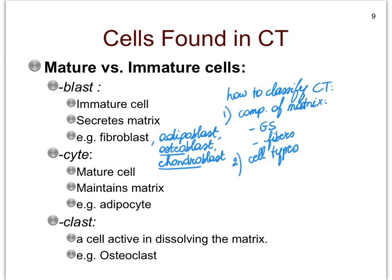In bone tissue, we actually have a third cell type, and that's called the osteoclast. This is a different cell whose responsibility is to literally break down bone tissue. When we get to the bone tissues, we'll talk more about the various bone cells — osteoblast, osteocytes, and osteoclast.